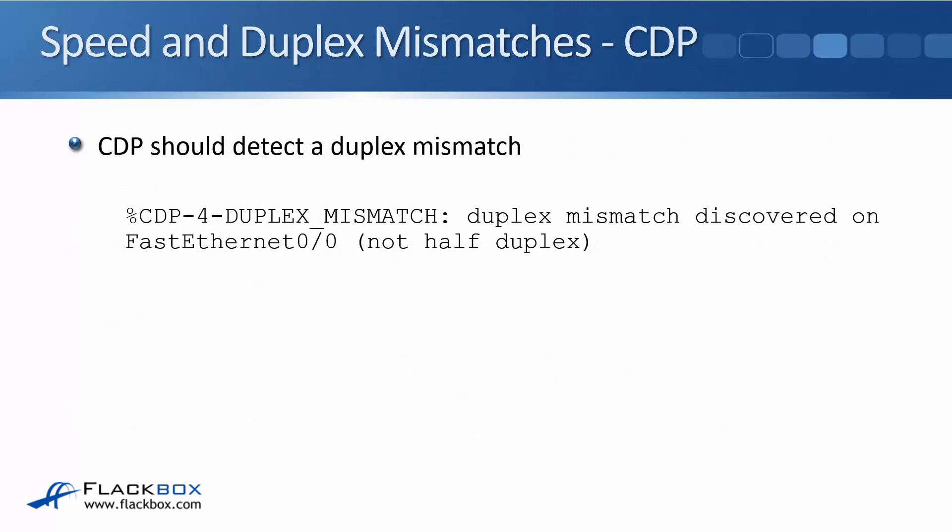If you do have a duplex mismatch, CDP — the Cisco Discovery Protocol — should detect it and log it, like in the example shown here: a duplex mismatch discovered on FastEthernet 0/0, not half duplex.